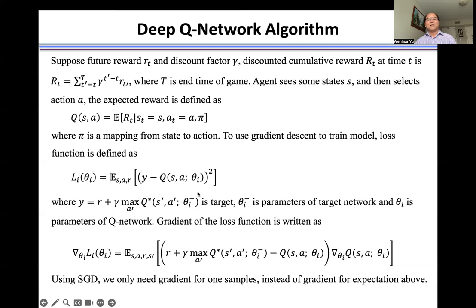These are two parameters. One is for the Q network, another for the target network. To update the model parameters, we need to calculate the gradient of the object function. And here is the expectation.